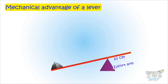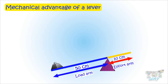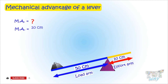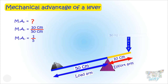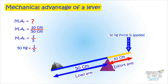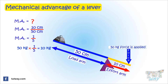Here is an example where the effort arm is smaller than the load arm, making it difficult to lift the load. The effort arm is 10 centimeters and the load arm is 50 centimeters, so the mechanical advantage is 1/5. If 50 kg of force is applied, 50 multiplied by 1/5 equals 10 kg — so only 10 kg of force will be forwarded. This means it will actually reduce the effort applied.